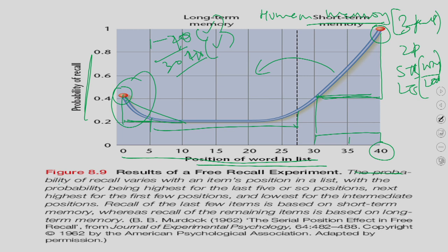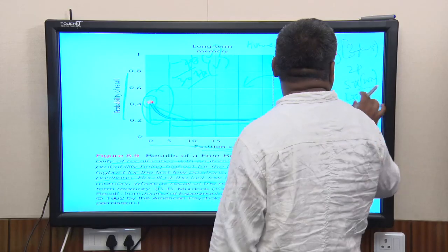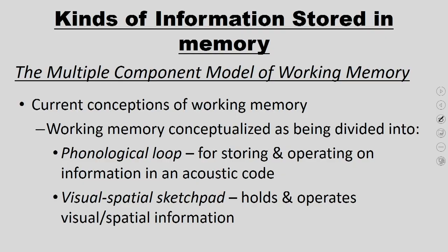The probability of recall varies with the item's position: highest for the last 5 or so positions, next highest for the first few positions, and lowest for intermediate positions. This serial position curve experiment — done by B.B. Murdoch — is the evidence that human memory is divided into two stores: working memory and long-term memory. For more details on Murdoch's experiment, refer to the cognitive psychology course.